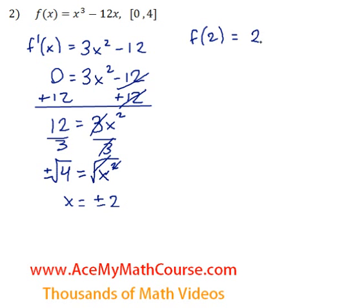So f of 2. We have 2 cubed minus 12 times 2. 2 cubed is 8. 12 times 2 is 24. And 8 minus 24 is negative 16.